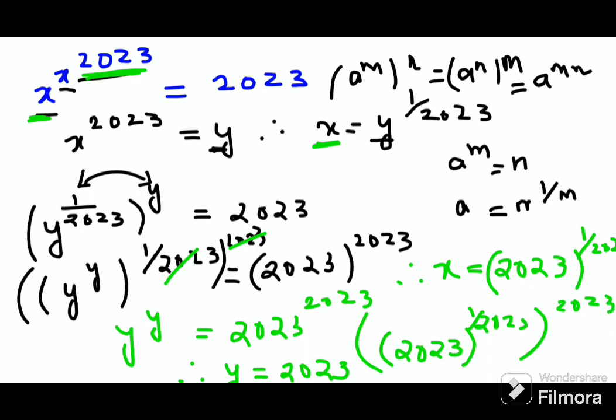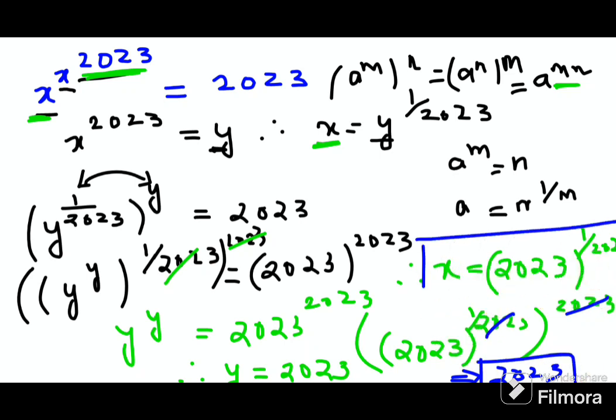So now if this is getting multiplied, this becomes a raised to m into n. Since there is lack of space, I can directly cancel them. Here this now becomes just 2023. So that, my dear friends, is the absolute value of x because it gives you your RHS back.